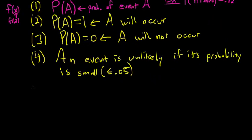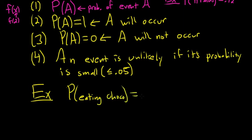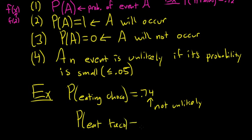So let's do a simple example. So you had the probability of eating choco, choco stands for chocolate, is equal to 0.74. So the probability that you eat choco, which is short for chocolate, is 0.74. So this is not unlikely. So not unlikely. So it's not unlikely to eat choco. But if you say, what's the probability that you eat a taco, right? And that's 0.02, then 0.02 is less than 0.05. So this is unlikely. So it's unlikely to eat a taco.